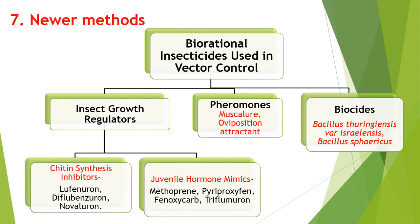Some newer methods are also tried for vector control, like biorational insecticides — where biorational means any substance of natural origin that has a lethal effect on the specific target pest. Some biorational insecticides are insect growth regulators, which regulate the growth and development of the insect. These are of two types: chitin synthesis inhibitors and juvenile hormone mimics. Then pheromones, which are sex attractants, and biocides.